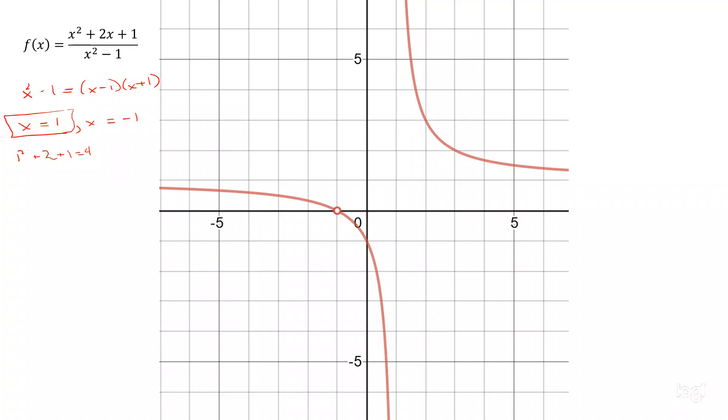On the other hand, we plug in x equals negative 1, and we get negative 1 squared plus 2 times negative 1 plus 1, and that's equal to zero. When the numerator and the denominator are both equal to zero, we don't know. We have to do a little more work.